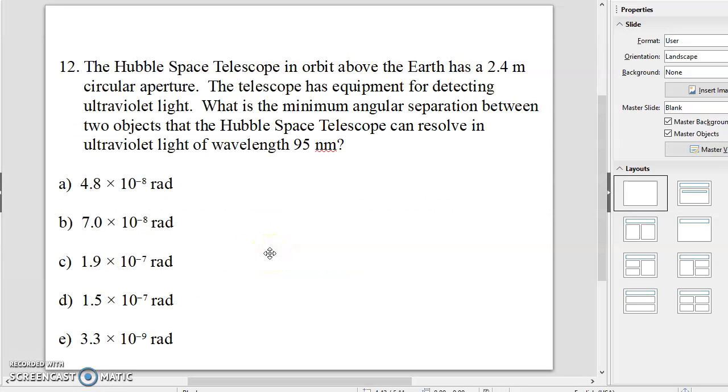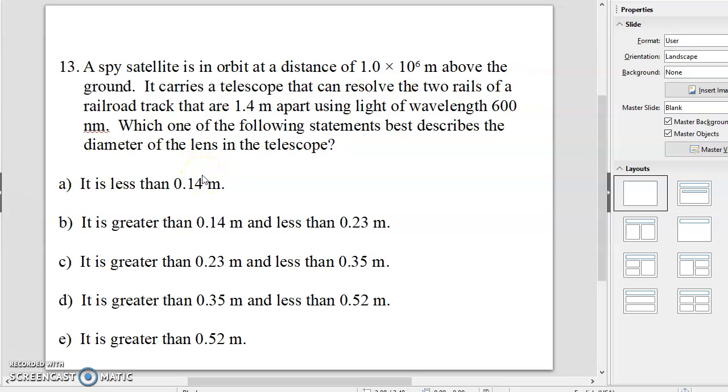Number twelve. The Hubble Space Telescope in orbit above the Earth has 2.4 meters circular aperture. And this is one everyone got right. The answer to that is 4.8 times 7 to the minus radians. And number thirteen is, again, one that everyone got right. The answer is E, it is greater than 0.52 meters.